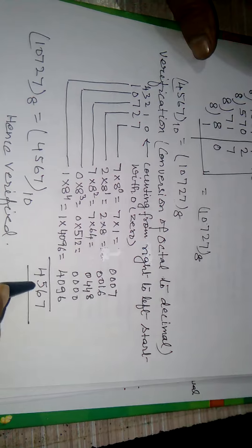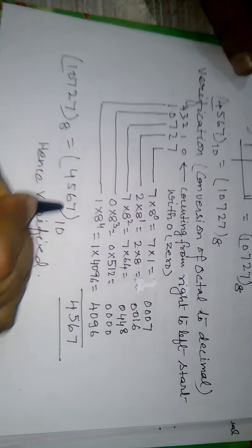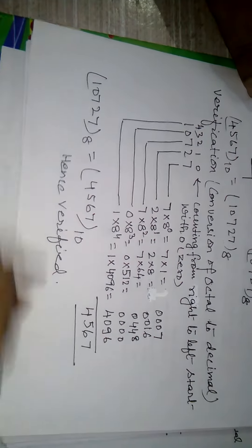And I did 4567. Now 10727 base 8 equals to 4567 base 10.